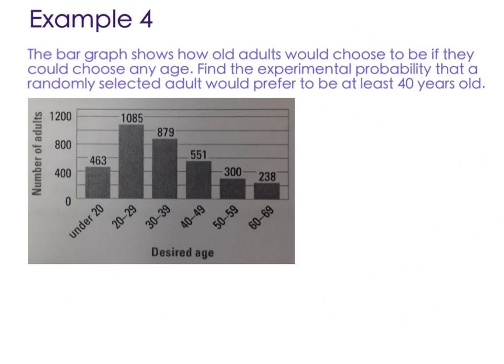Here's one. A bar graph shows how old adults would choose to be if they could choose any age. Find the experimental probability that a randomly selected adult would prefer to be at least 40 years old. So at least is a key word, key phrase here. Here's our chart. It says that 463 adults wish they were under 20. The most, 1,085 adults wish they were in their 20s. That's where I would choose to be, too, maybe. 879 choose to be between 30 and 39. 551 want to be between 40 and 49. 300 between 50 and 59. And 238 between 60 and 69. So first we have to add up all these numbers to see how many people they actually surveyed. And that would be 3,516 total people. That's going to be your denominator.